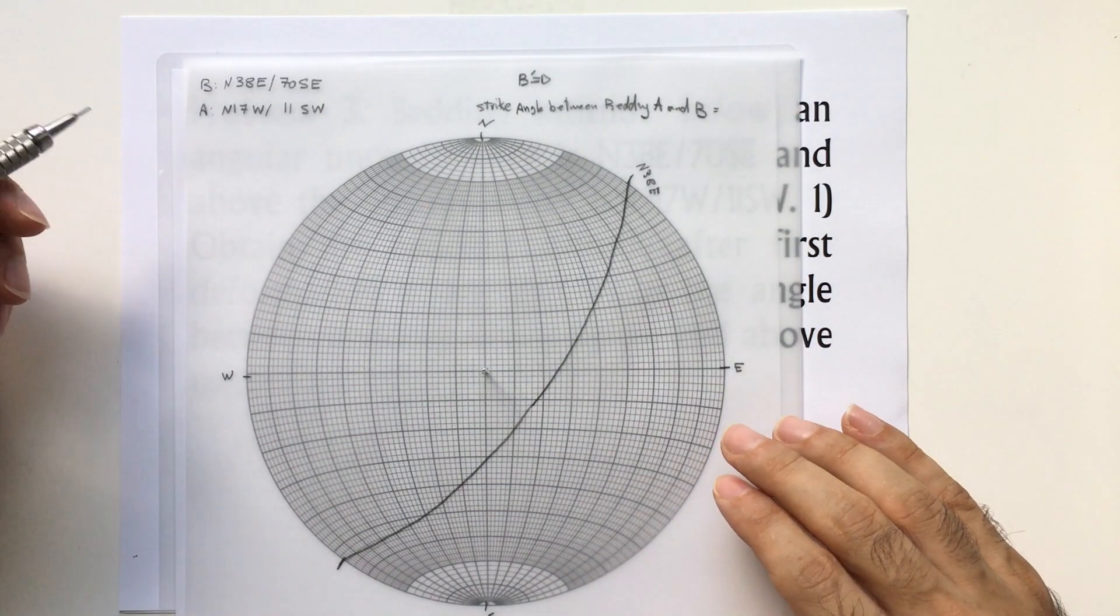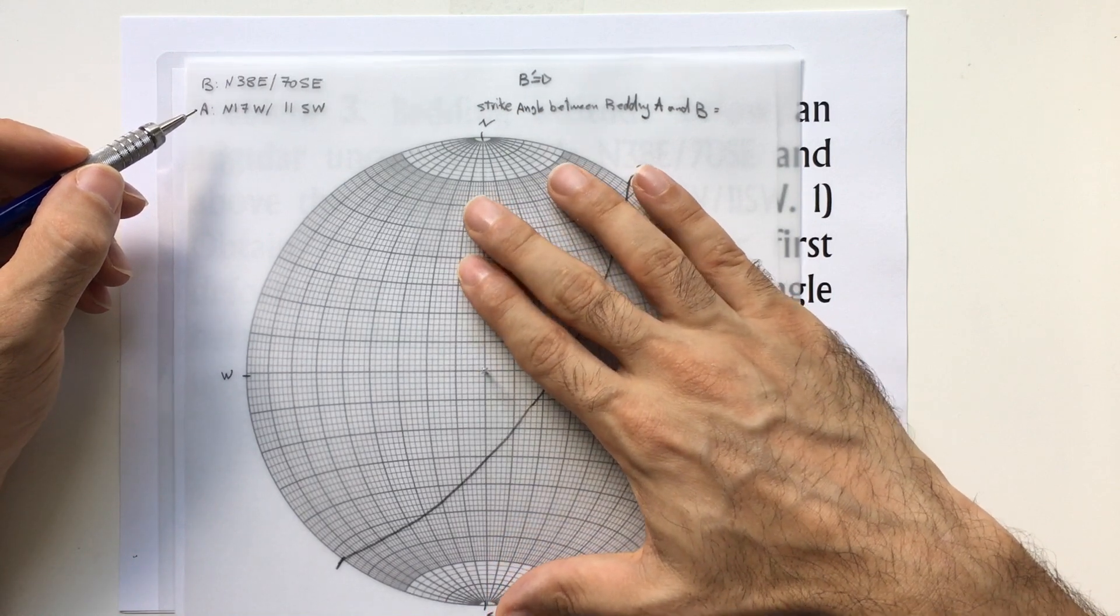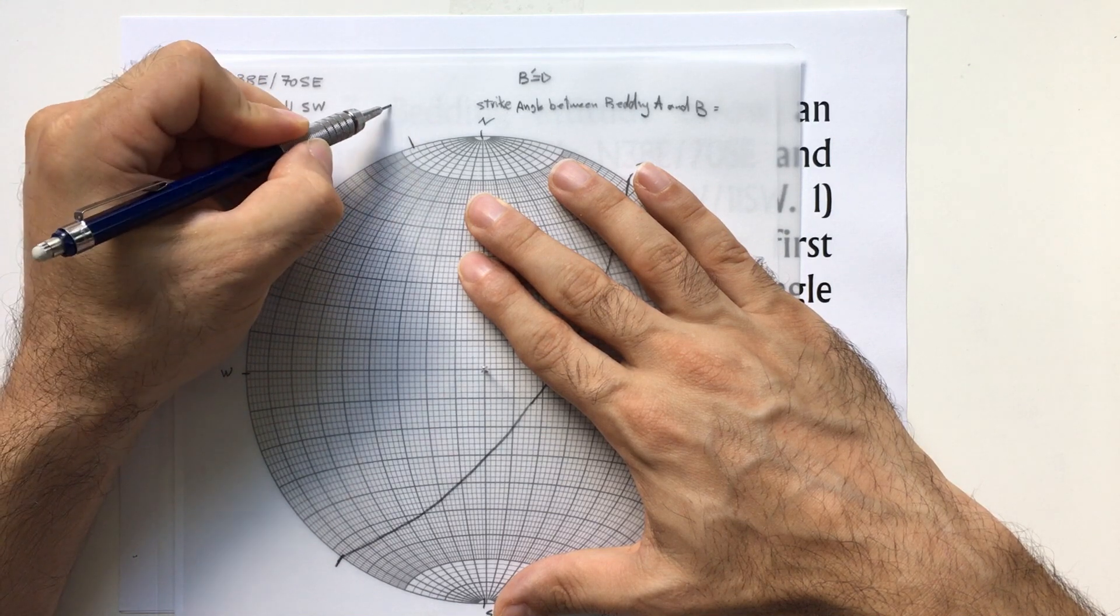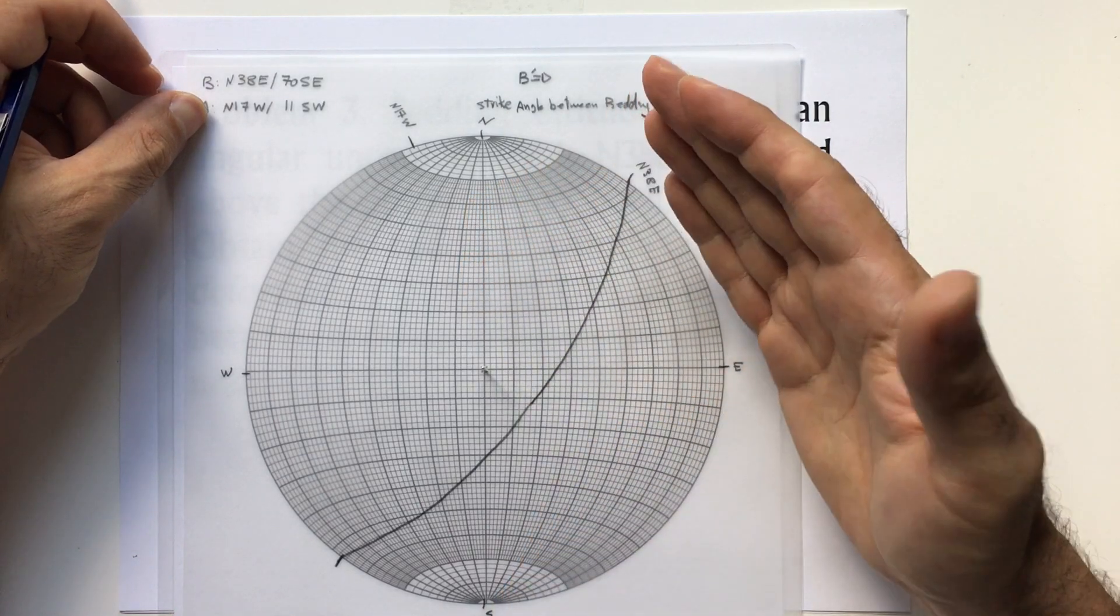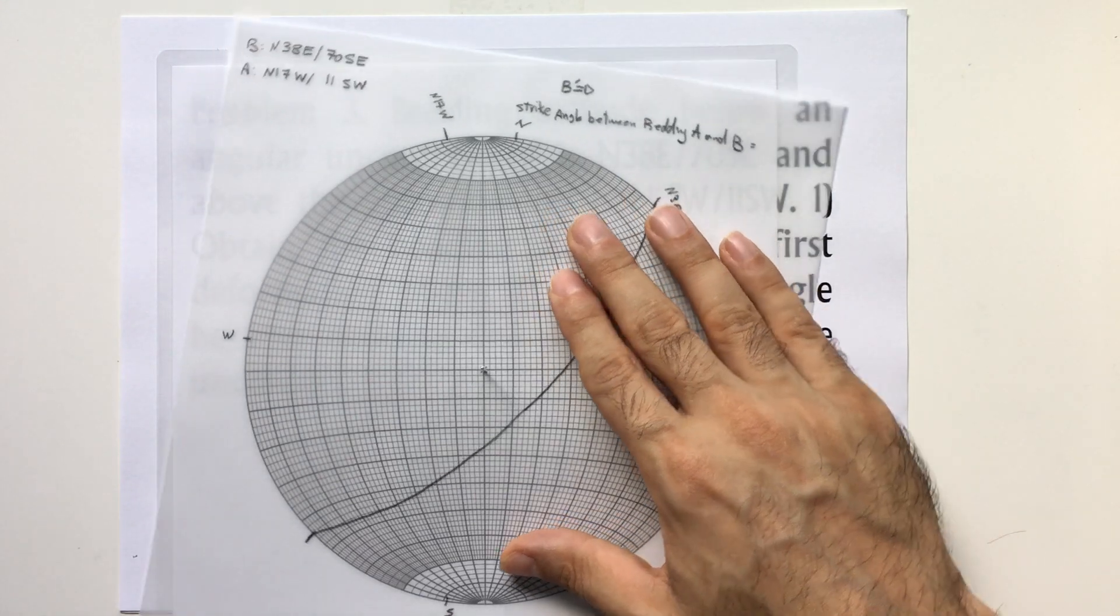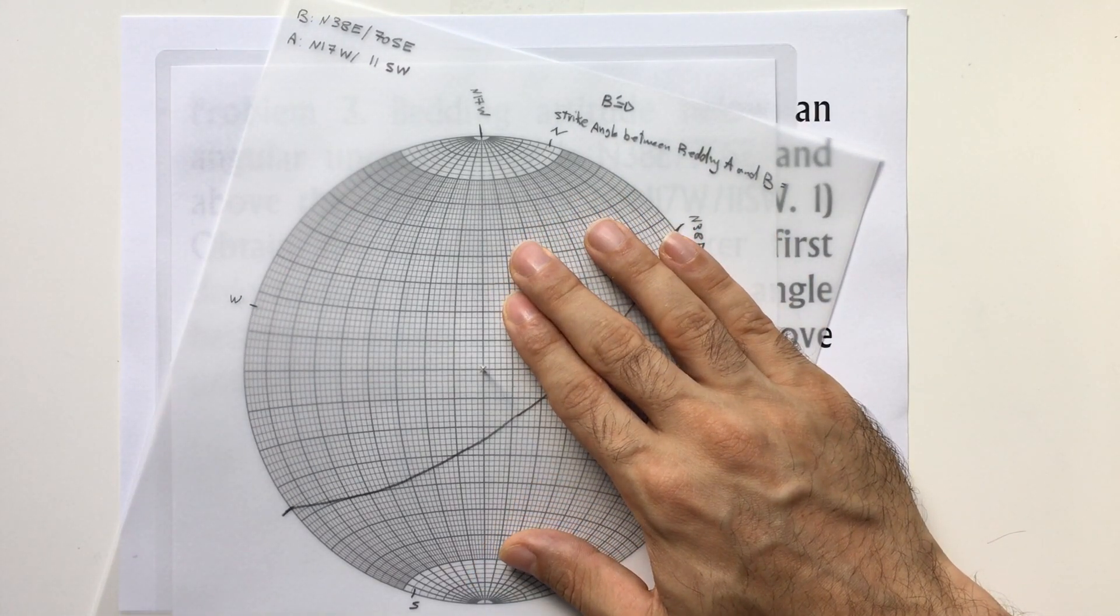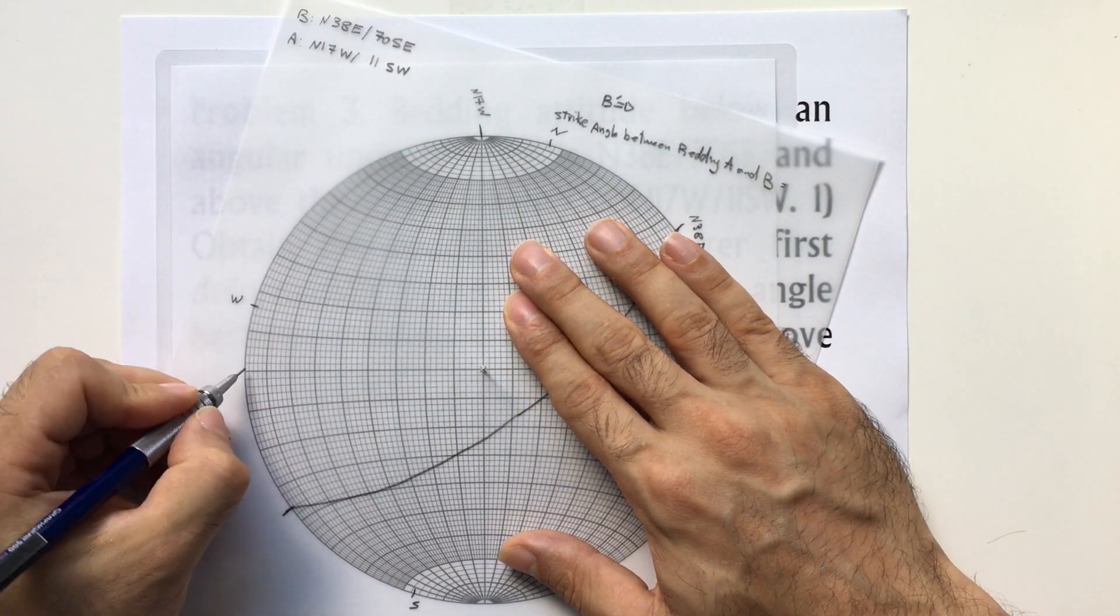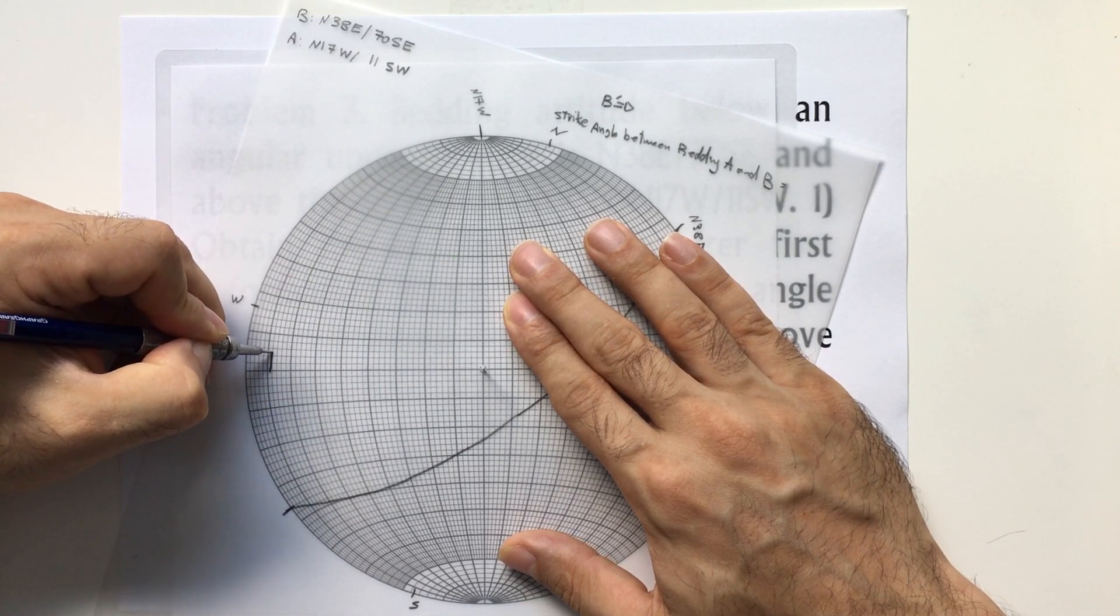Above unconformity, the bedding has a strike of north 17 west: 10, 12, 14, 16, 17. It's dipping towards southwest 11 degrees. I rotate this one to the origin, 11 degrees. This is 10 and this is the 11, and I will draw the trace.